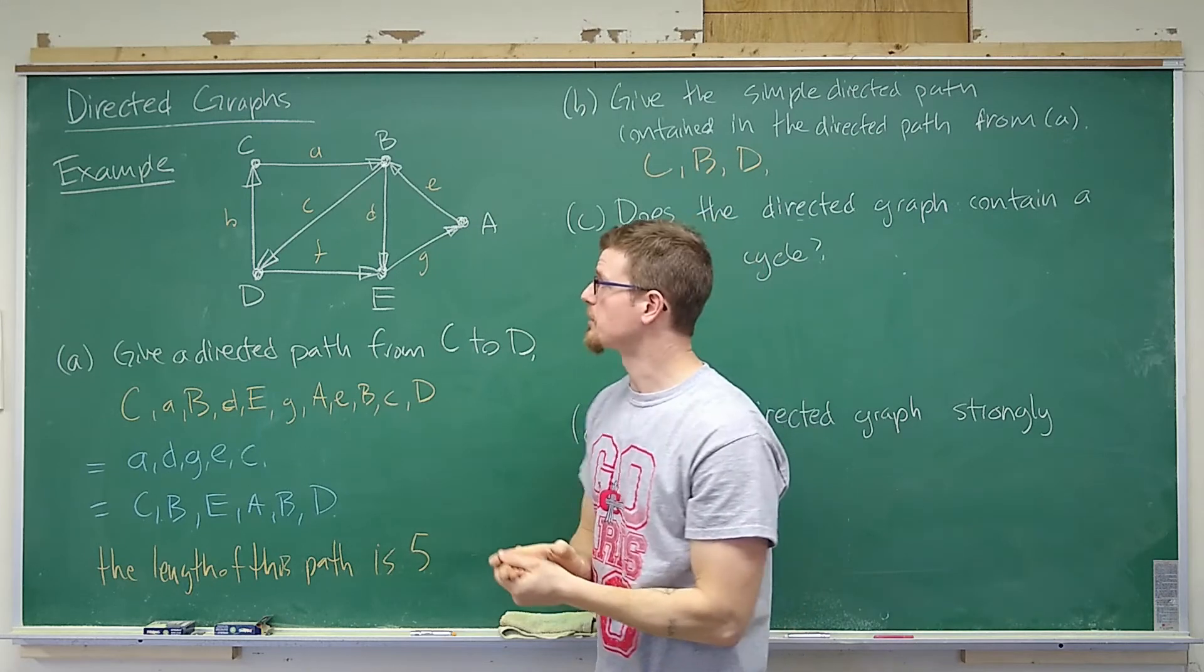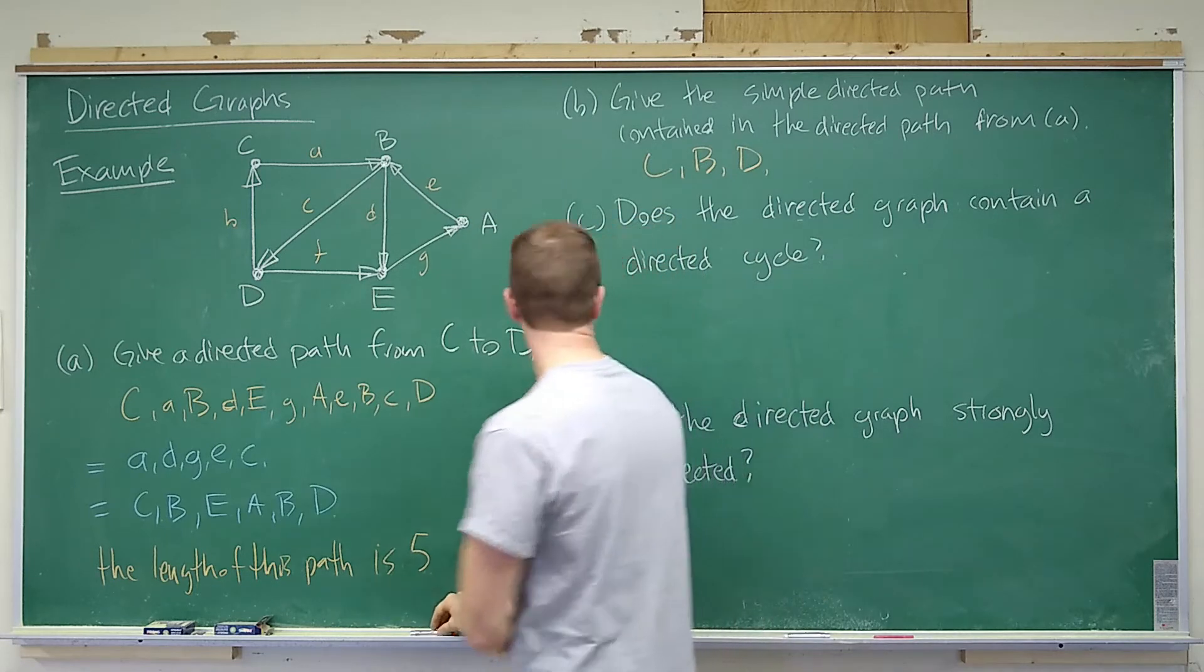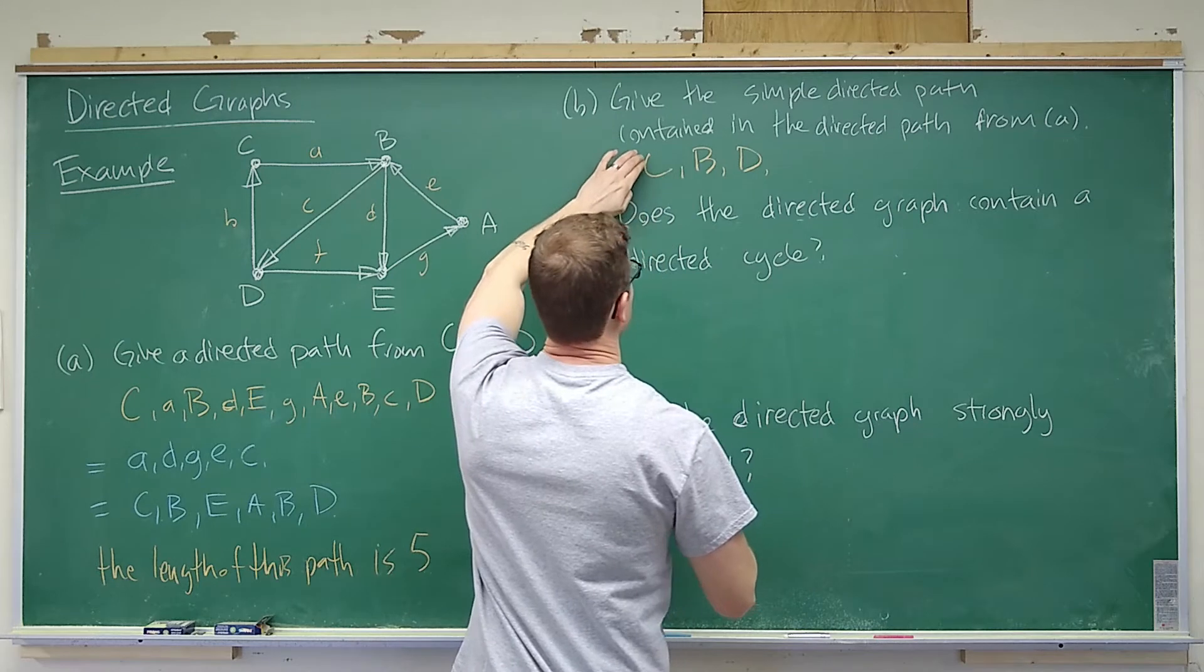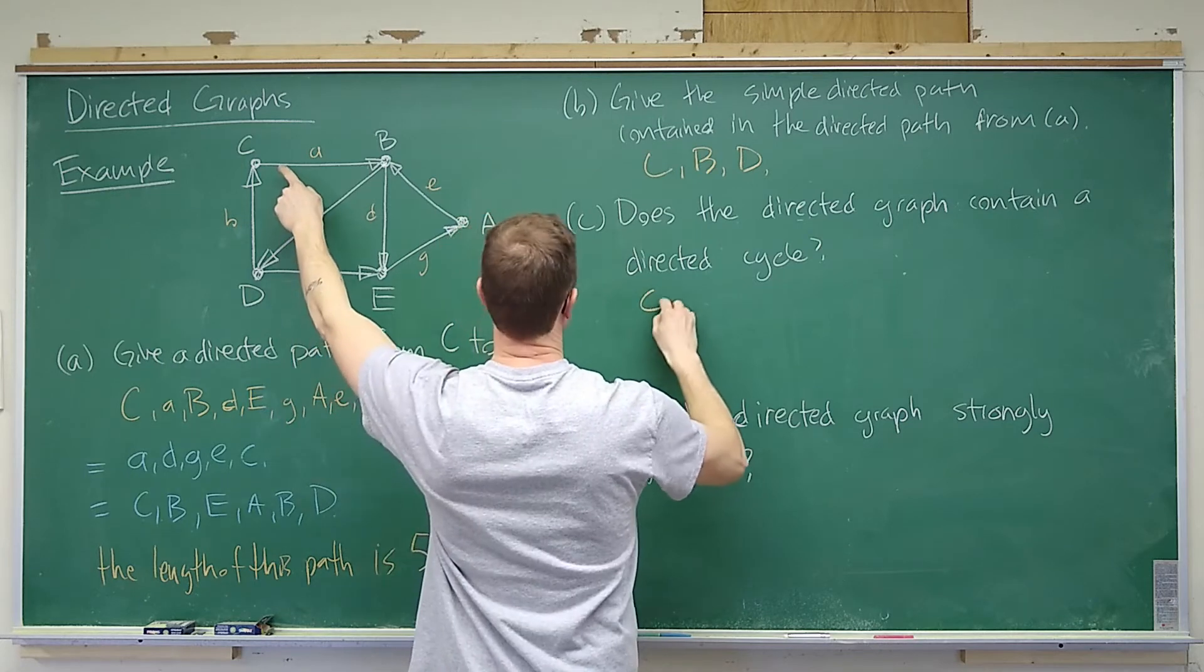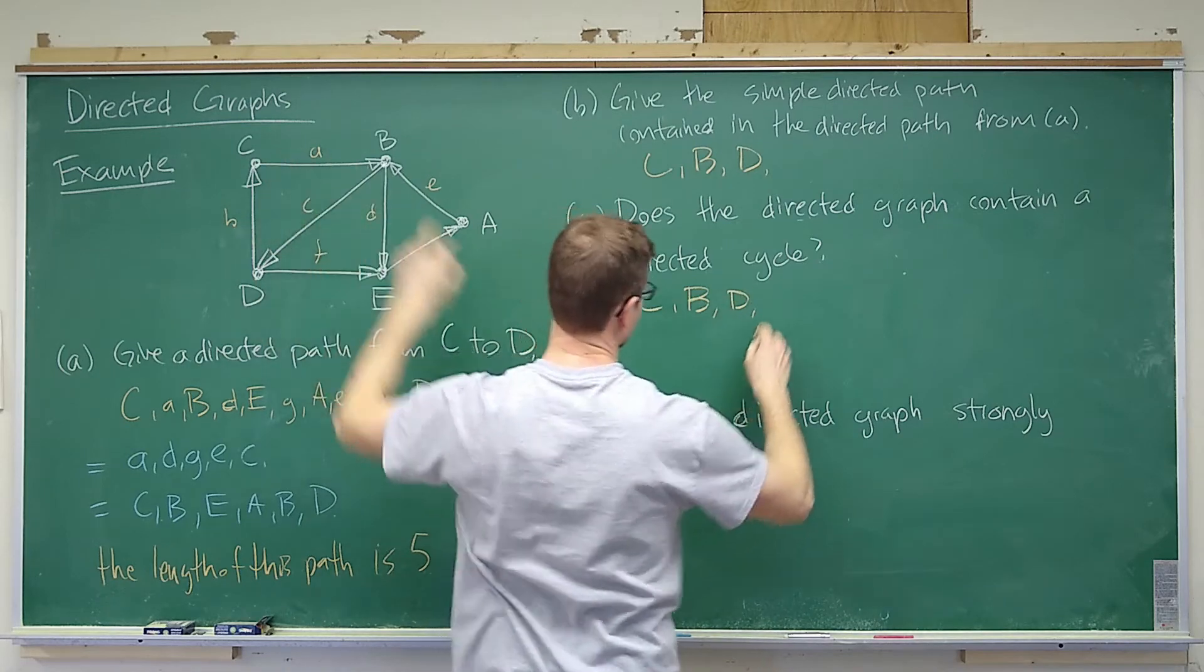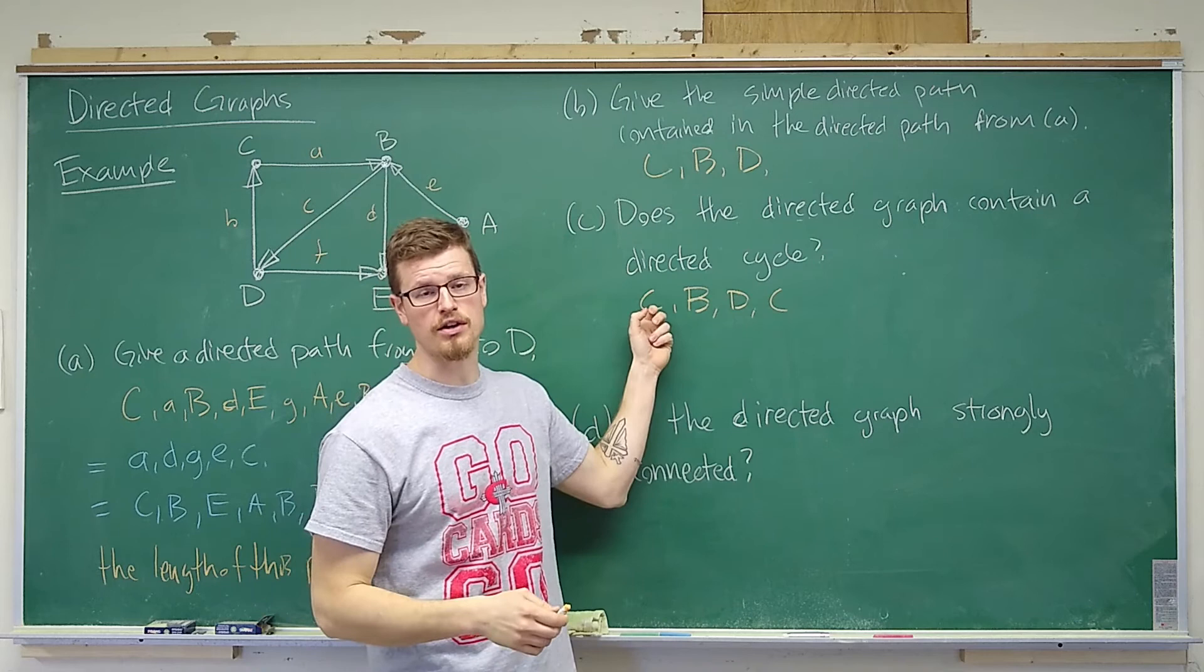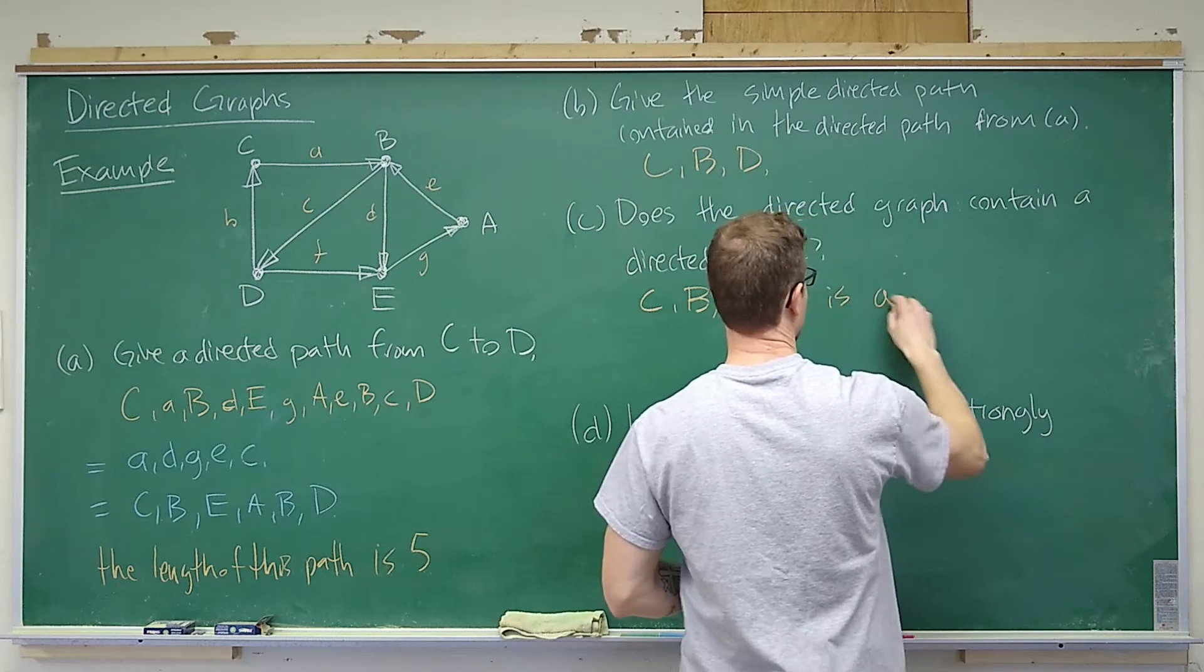Yeah, there are actually several cycles in this graph. If I remember correctly, I was able to find three different cycles. So let's give an example of one. So I could travel, actually taking a look at the simple path, simple directed path we just looked at in the previous part. Or we could travel from C to B to D and then back to C. So the only vertex that's repeated in our representation of the cycle is the vertex C, which is where we started, the initial vertex, and where we ended, the terminal vertex. So this is a cycle.